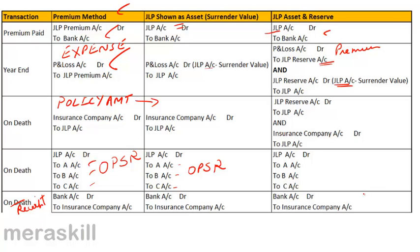On death of the partner, the joint life policy reserve account is closed by transfer to the joint life policy account. On the policy amount becoming due: insurance company account debit to joint life policy account. Then joint life policy account debit to the partners' capital accounts in the old profit sharing ratio. Finally, when the amount is received: bank account debit to insurance company. Same treatment as before.